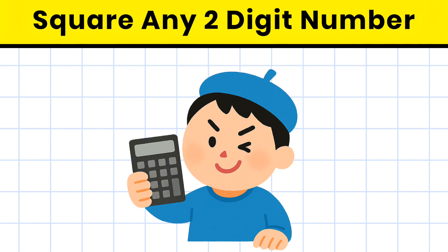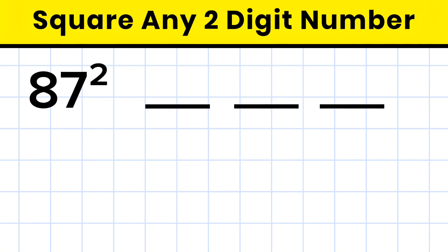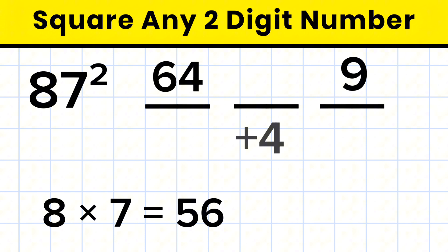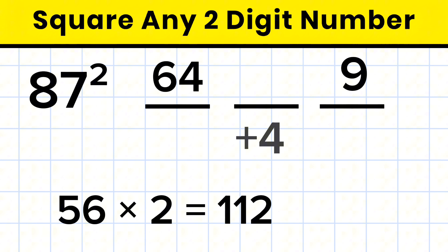Now lastly, we'll go with the bigger one. That is 87 square. So 8 square equals 64. We'll write 64 in the first box. 7 square gives us 49. So we'll write 9 at the end and carry 4. 8 times 7 equals 56.